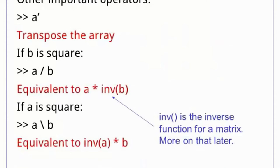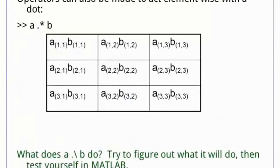Other important operators are the transpose operator, which is a single quote, and two kinds of division. The first division is a forward slash, and it is equivalent to a divided by b if a and b are scalars. If they are arrays, it is equivalent to a times the inverse of b. As a convenience, MATLAB provides a backslash division, which is the inverse of forward slash. Rather than loop through each element of two arrays to combine them element-wise, most operators can be made to perform element-wise operations by putting a period before the operator. For instance, a dot times b returns the element-wise product of a and b. Do you see how this might help the programmer avoid writing a loop?